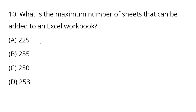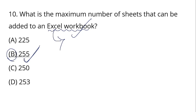What is the maximum number of sheets that can be added to an Excel workbook? The maximum is 255. Excel is spreadsheet software; its basic unit is a cell, formed at the intersection of a row and column. Cells make up worksheets, and worksheets make up a workbook. Excel files have the extension .xlsx.